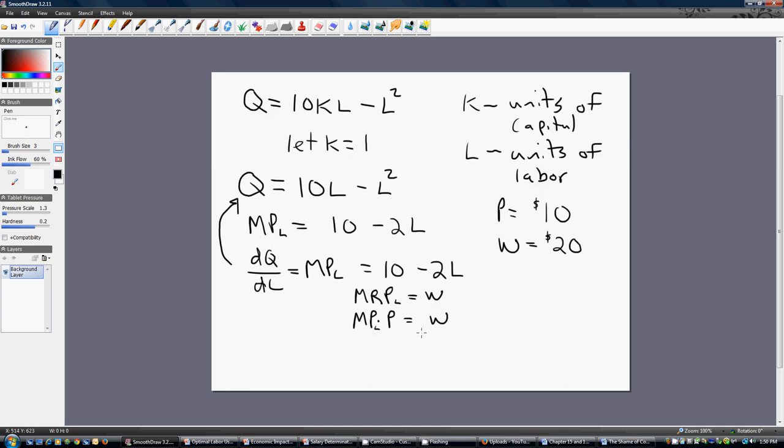So, now it's just a matter of substituting three things into our optimality condition. Marginal product of labor is 10 minus 2L. We're going to multiply that by the price of 10, and set that equal to $20, the wage. Simplifying this, we're going to get 100 minus 20L equals 20.